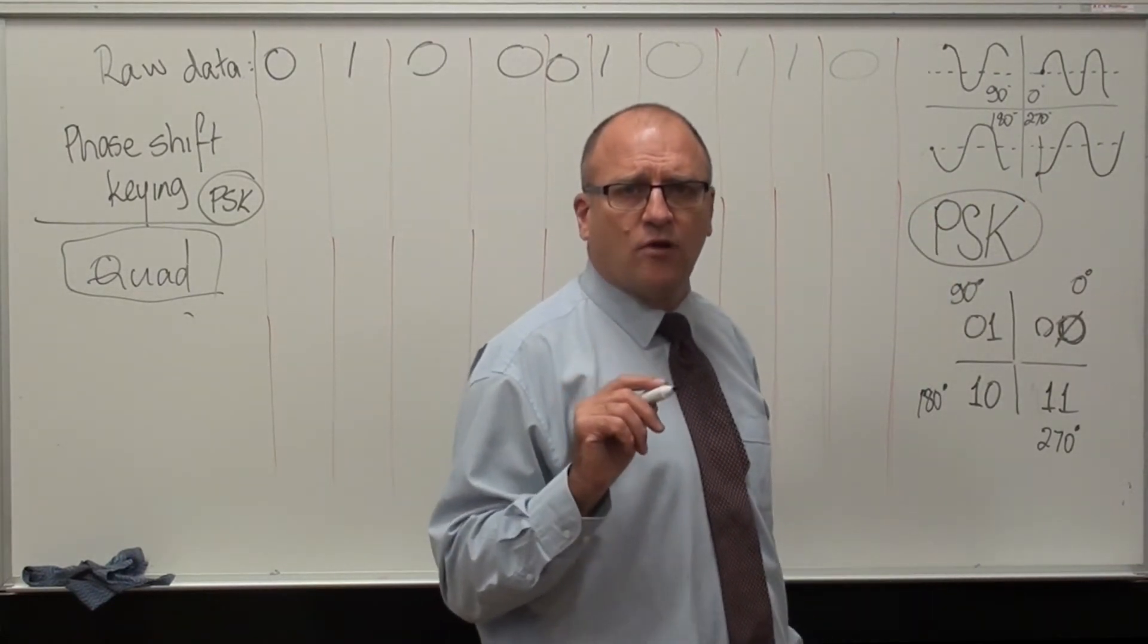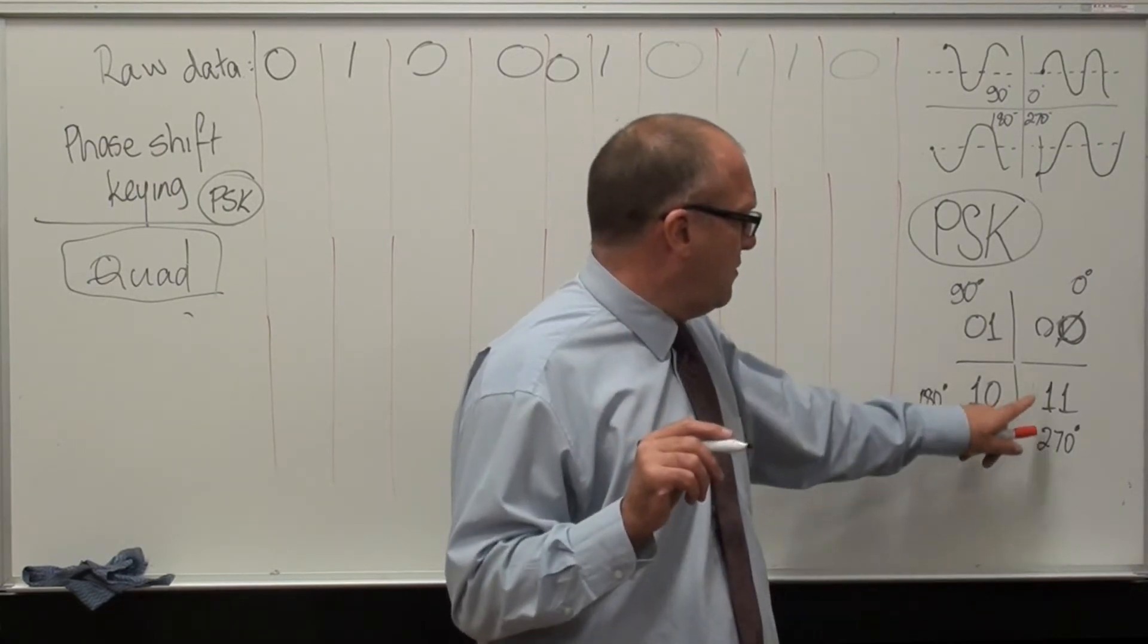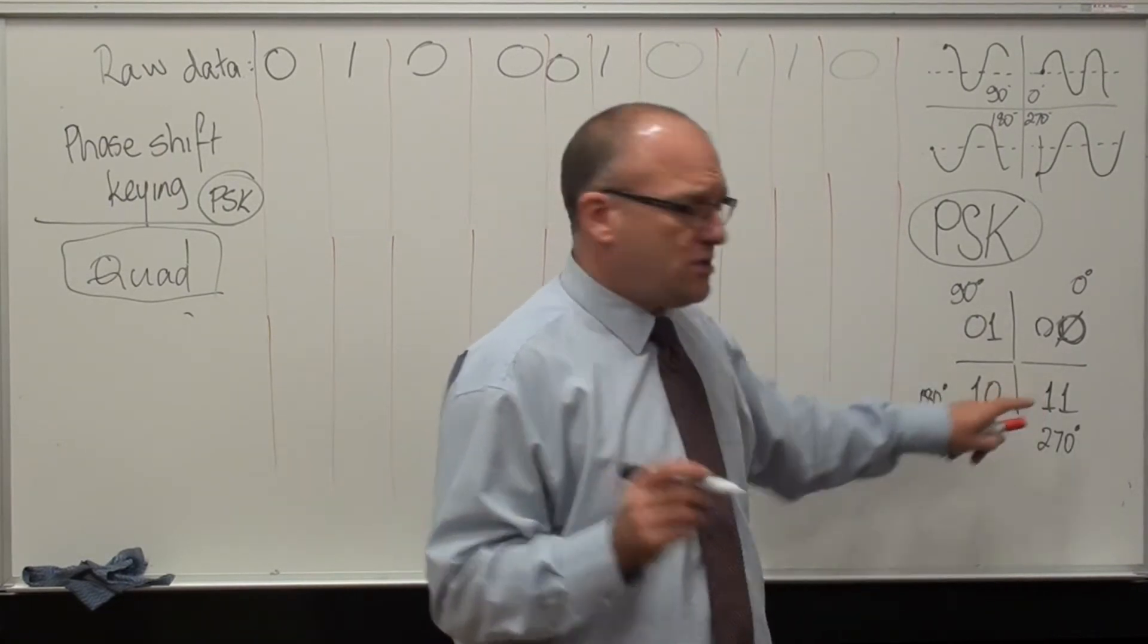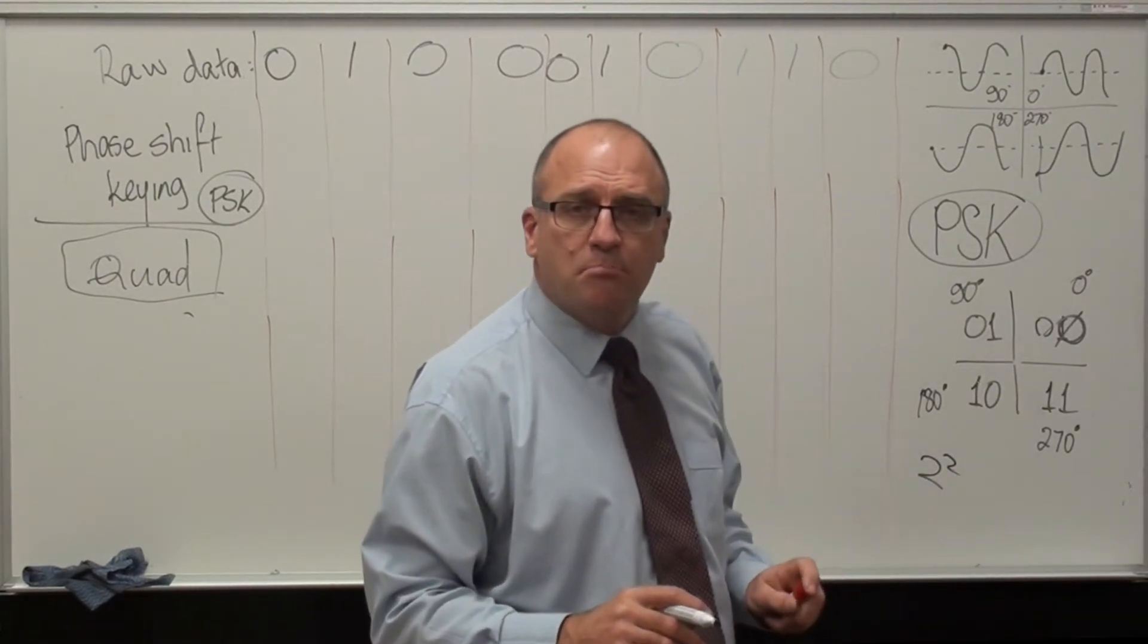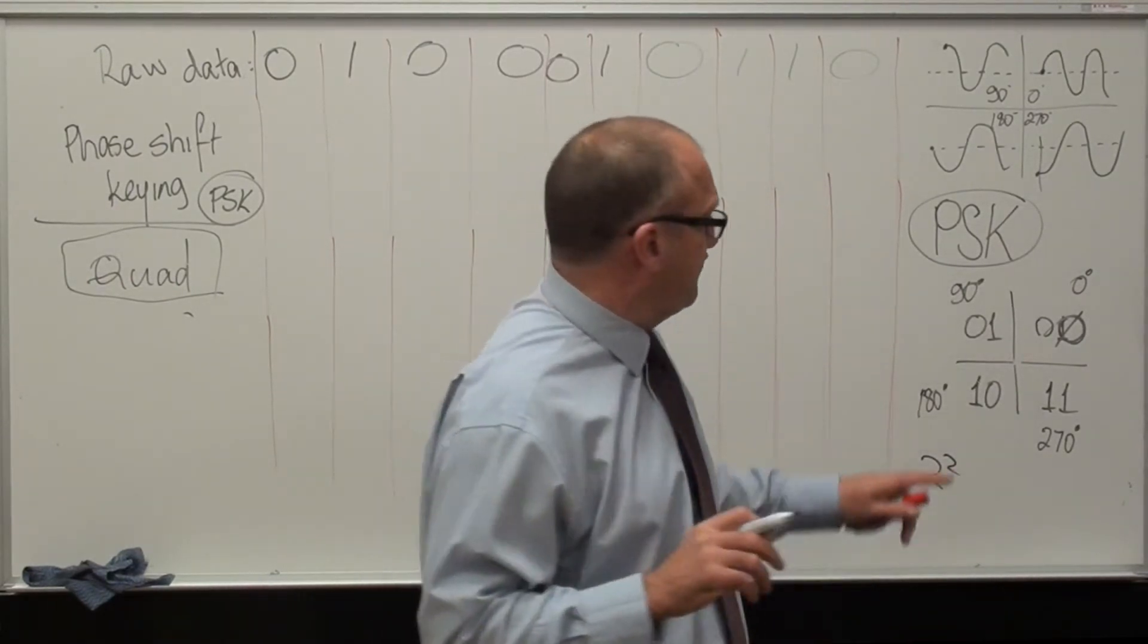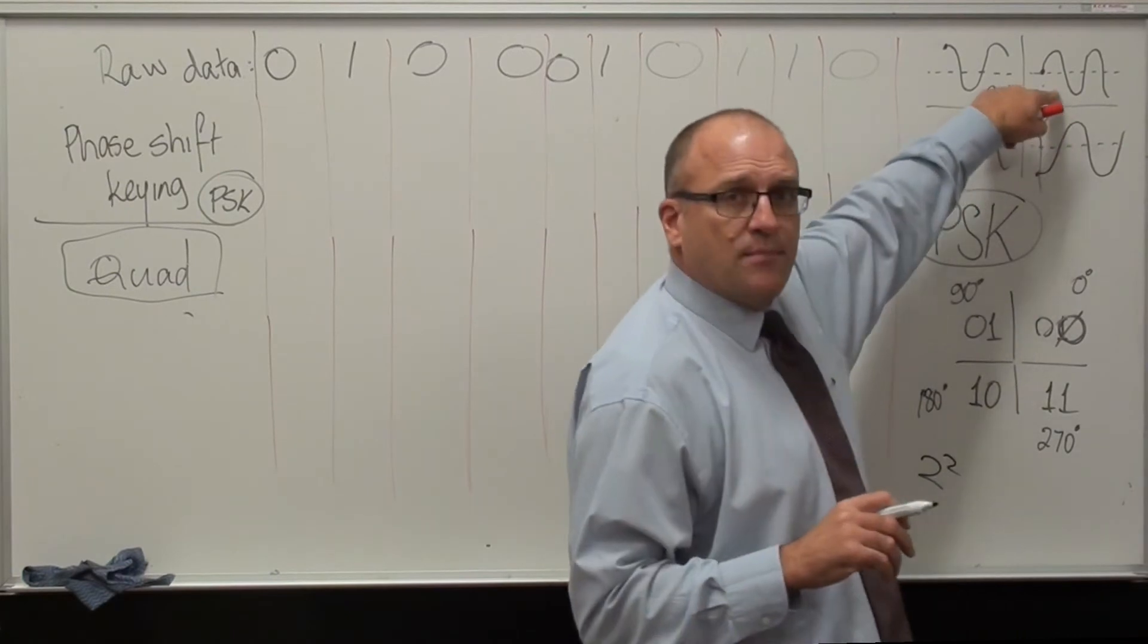And because you have got four options now, you can have four different, 2 to the power 2, numbers per signal. So if I transmit something at 0,